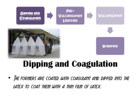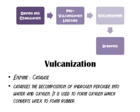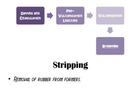Next, the formers are coated with coagulant and dipped into latex to coat them. In the pre-vulcanization leaching stage, the formers are immersed in a bath to wash out excess additives from previous stages such as coagulant. Enzyme catalase catalyzes the decomposition of hydrogen peroxide into water and oxygen molecules. It is used to form oxygen which converts latex to rubber. Lastly, the stripping step involves removal of rubber from formers.